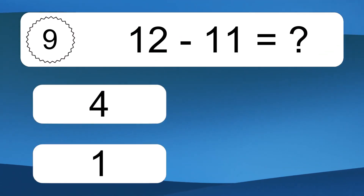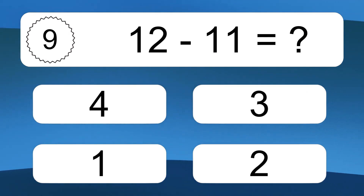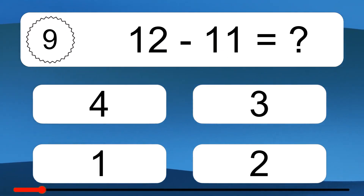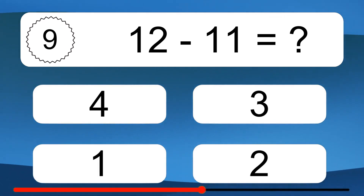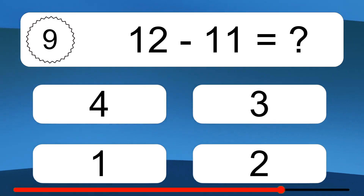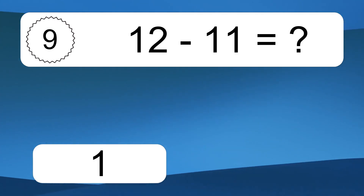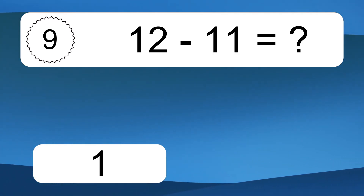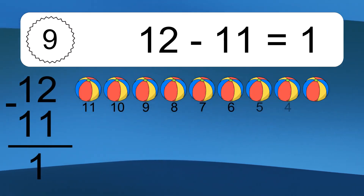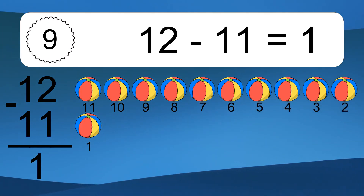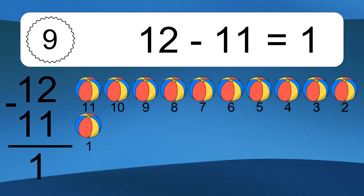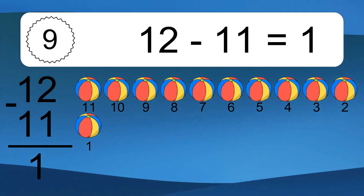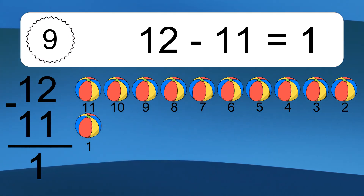12 minus 11 equals what? 12 minus 11 equals 1. Let's count it. 11, 10, 9, 8, 7, 6, 5, 4, 3, 2, 1.